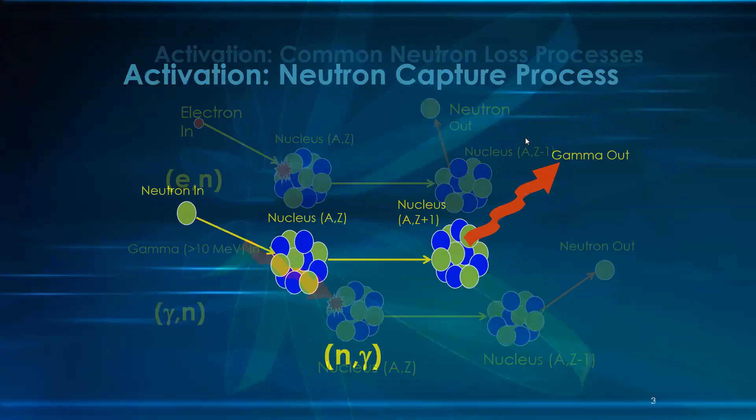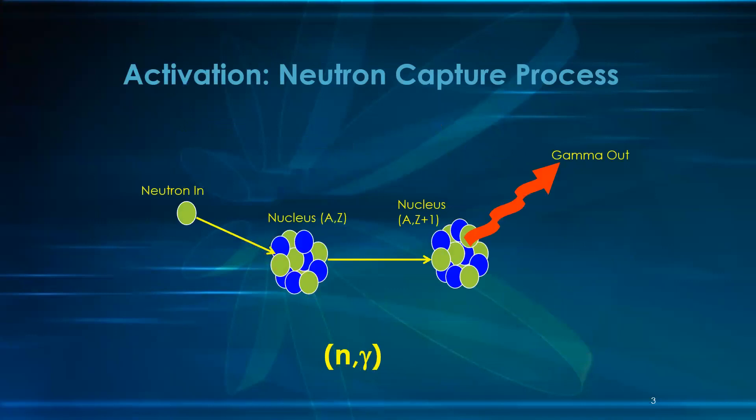On the other hand, when the neutron interacts with the nucleus, it could produce a photon. This is called neutron capture.